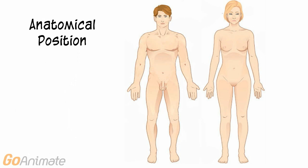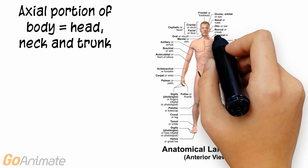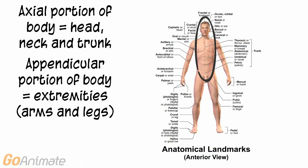Here is what anatomical position looks like. The human body can be divided into the axial portion, which contains the head, neck and trunk, and the appendicular portion, which contains the extremities or arms and legs.